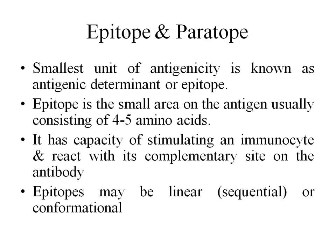An epitope is a small area on the antigen — around four to five amino acids can combine to form an epitope. It has the capacity of stimulating an immunocyte and also reacting with the complementary site on the antibody.